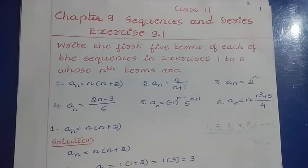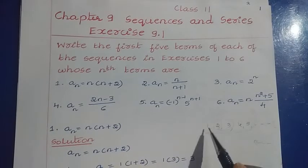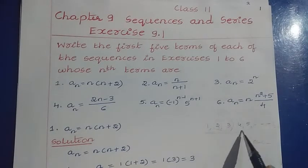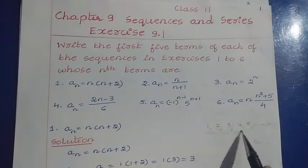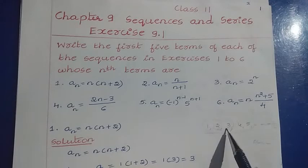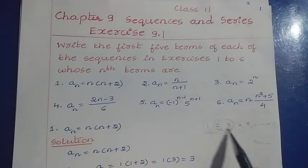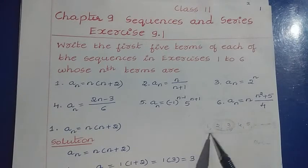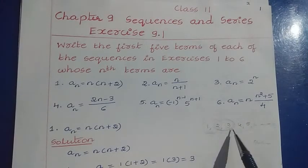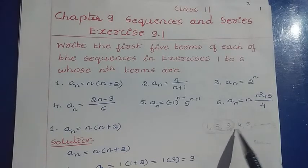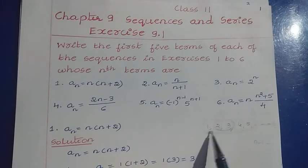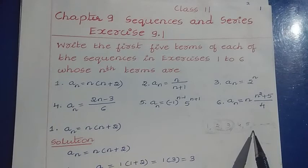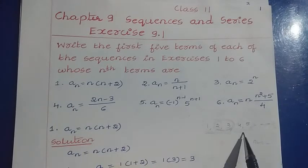Before solving this problem let us see what is a sequence. Consider some values 1, 2, 3, 4, 5 shown up to infinite values. If you observe any two numbers in order, between 1 and 2 the difference is 1, between 2 and 3 the difference is 1, between 3 and 4 the difference is 1. To generate the next number, plus 1 is added to each number — 2 plus 1 is 3, 3 plus 1 is 4, 4 plus 1 is 5. So we can call this a sequence. Sequence means arrangement of numbers in a particular order where some rule is followed.